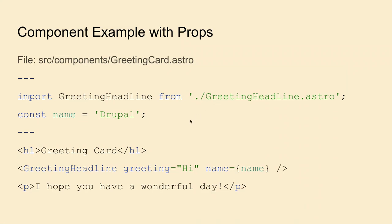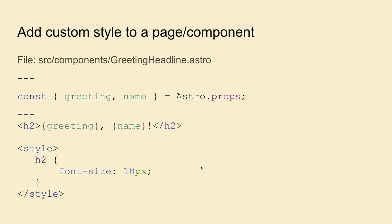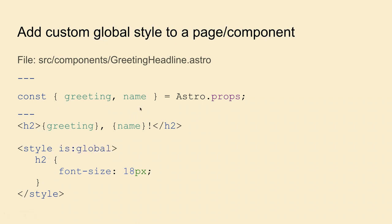You can call other components and pass props to them. You can also add custom scoped styles to a component — the style is isolated to that component and won't be applied to any other component or any other h2 tag on the page unless it's within that component. If you want to use the same style across multiple components, you can set the `is:global` directive, and now the h2 style will be used across all other components.